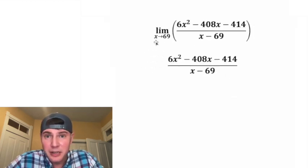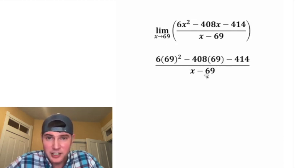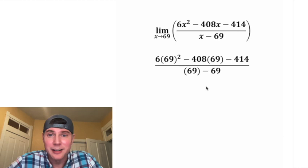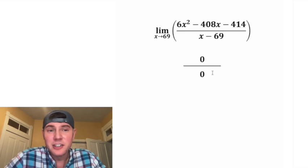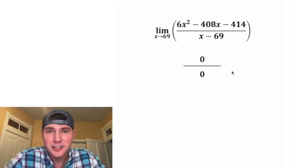Since we want to know the limit as x approaches 69, we can just substitute 69 in for each of these x's and see what we get. After you plug it into a calculator, all this on top gives us 0 and 69 minus 69 is also 0. So this is an indeterminate form. We don't actually know what number this is, so we have to find a different way to solve this.